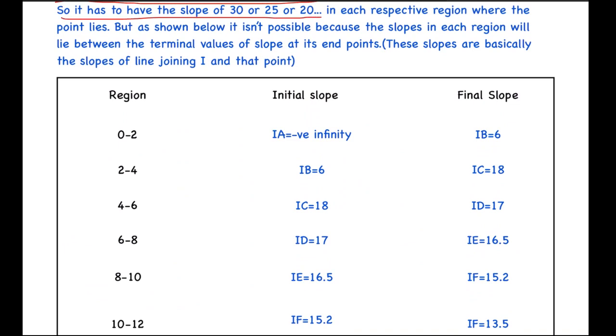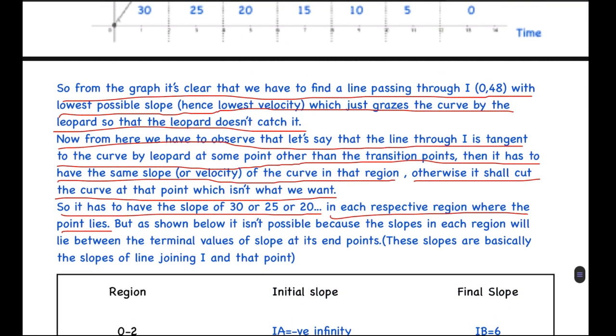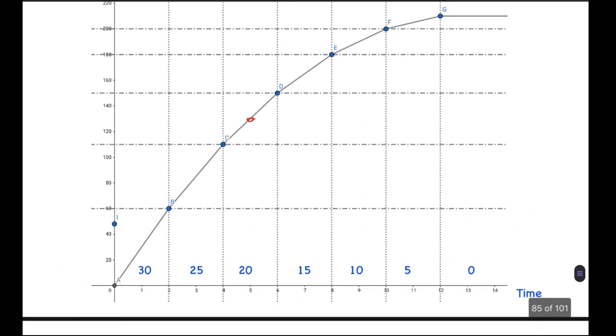So it has to have a slope of values 30, 25, or 20, and so on, as we said, because they are the only possible slopes of the curve of the cheetah, or basically the only possible velocities which the cheetah is attaining in each respective region where the point lies. So for example, if we had to consider a point in this region, the line IP should have a slope of 30. If it had been in this region, it should have had a slope of 25, and in this region 20, and so on.